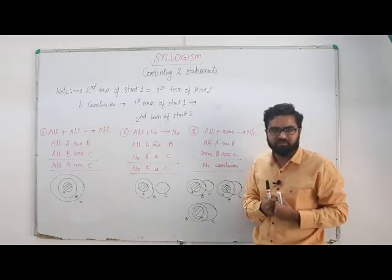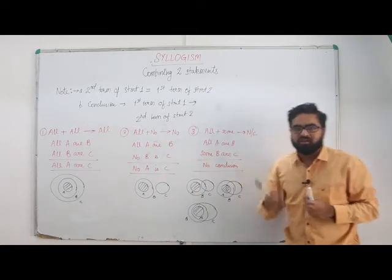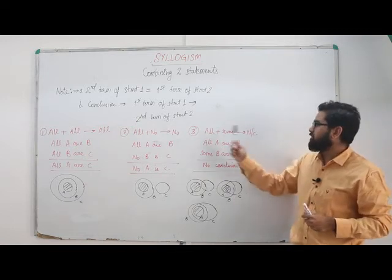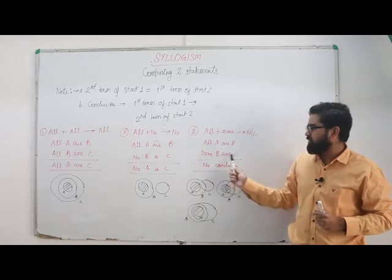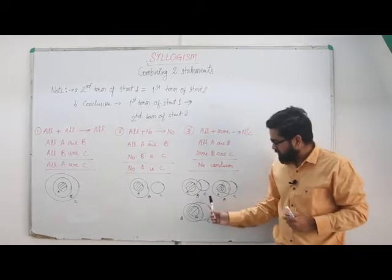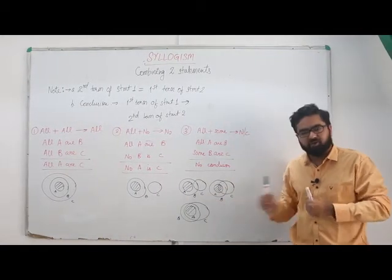Now look at the third part: All + Some. So we have 'All A are B' and 'Some B are C'. So there are three possibilities here.